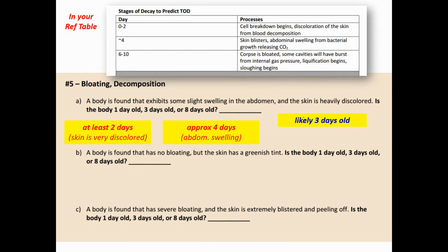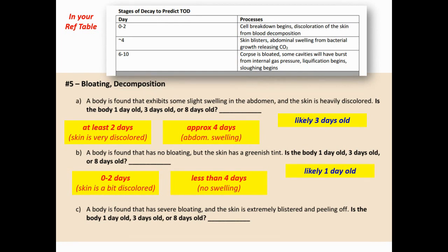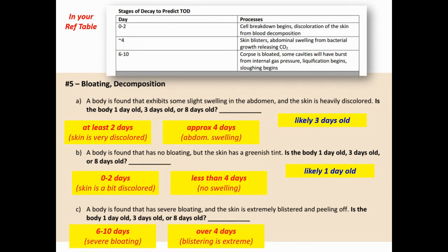Case 5B: no bloating but the skin has a greenish tint — one, three, or eight days old? The slight discoloration puts it in the zero-to-two day range; no swelling or bloating means definitely less than four days. One day is the best estimate. Case 5C: severe bloating and extremely blistered, peeling skin — severe bloating means 6 to 10 days; blistering means at least four days past. Eight days old is the best estimate.